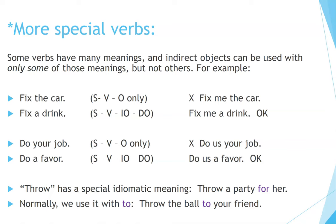More special verbs: some verbs have many meanings and indirect objects can be used with only some of those meanings, but not others. For example: 'fix the car' — subject, verb, object only; not 'fix me the car.' But 'fix a drink' works differently — 'Fix me a drink' is okay. Similarly, 'do your job' is subject, verb, object only; not 'do us your job.' But 'do a favor' works: 'Do us a favor' is okay.